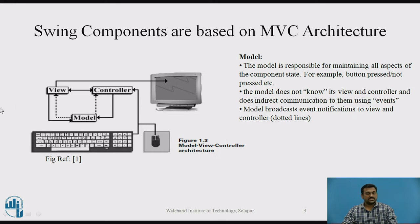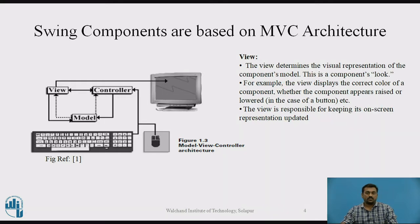However, the model does communicate indirectly to the view and controller as event notifications. That is why you can see the dotted lines here — the dotted line indicates that the model communicates with view and controller indirectly through event notifications. The next component is view. The view determines the visual representation of the component's model.